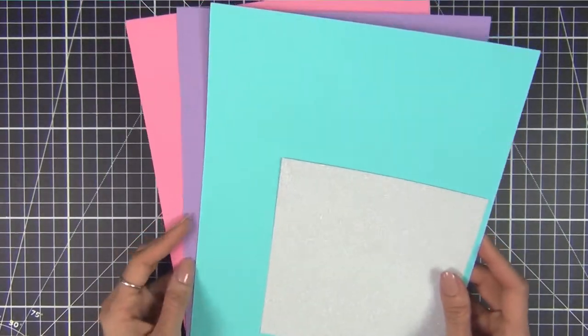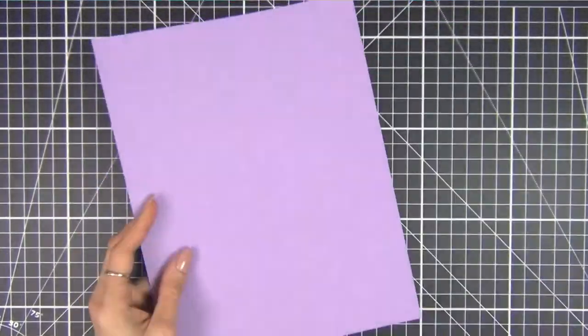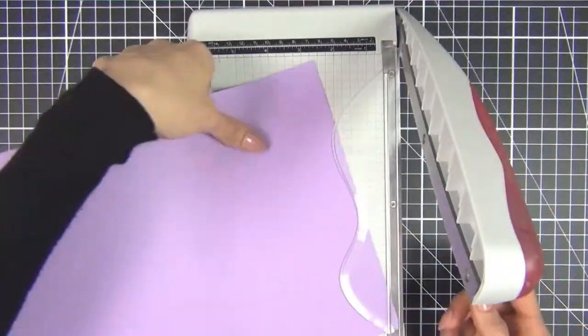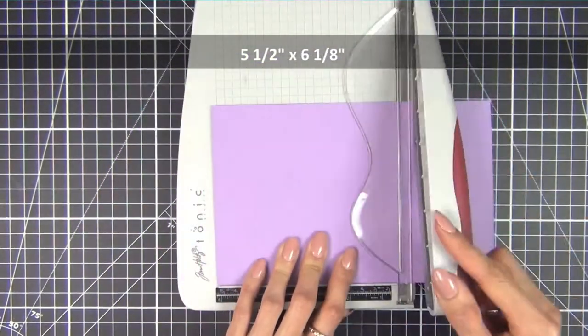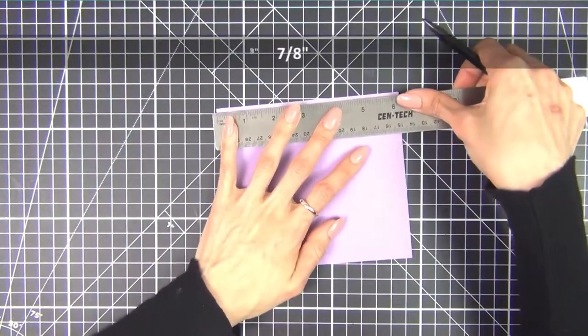I'm starting off by taking a piece of purple cardstock and cutting it down to 5.5 x 6.18 inches. Next I take a ruler and mark at 7.8 inches in from the top left.